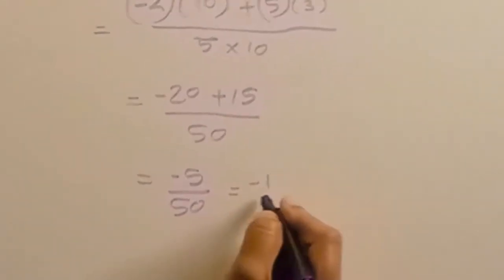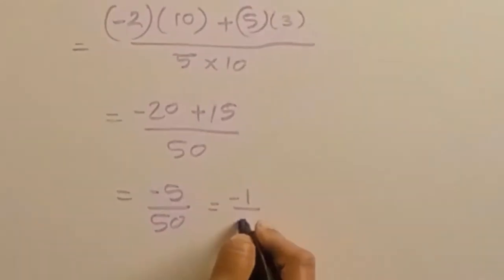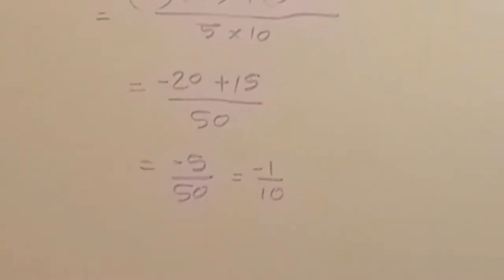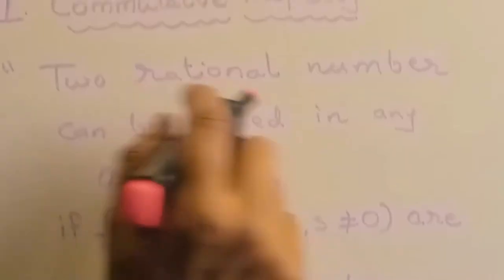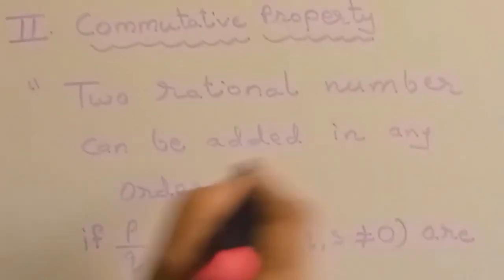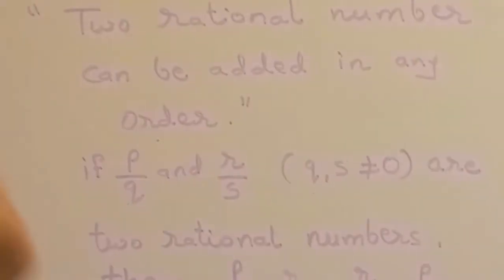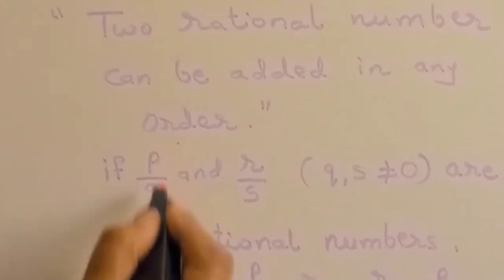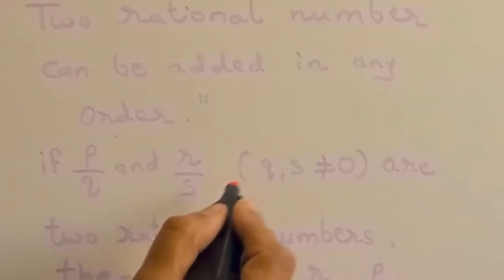You can cancel this and it will become minus 1 by 10. This confirms the closure property — the result is a rational number. Second property: commutative property. Two rational numbers can be added in any order.